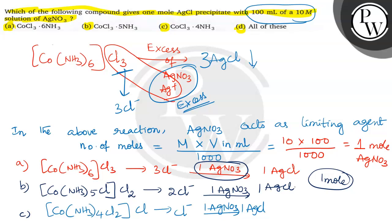But now here, AgNO3 is limited. Hence all are giving one mole.